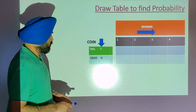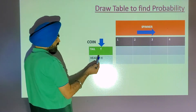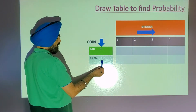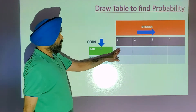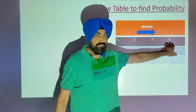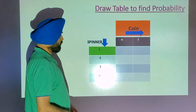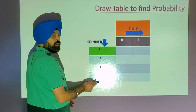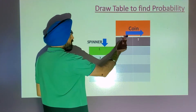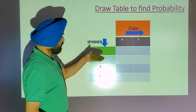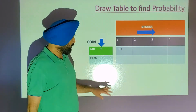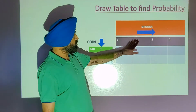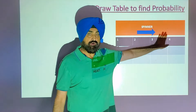For example, there is a coin and a spinner. You can vertically take coin possibilities — tail can come and head can come — and horizontally you can take spinner: one, two, three, four. Or you can use the other way also; it is up to you whichever method you like. You can take the spinner on the vertical side and horizontally you can take the coin.